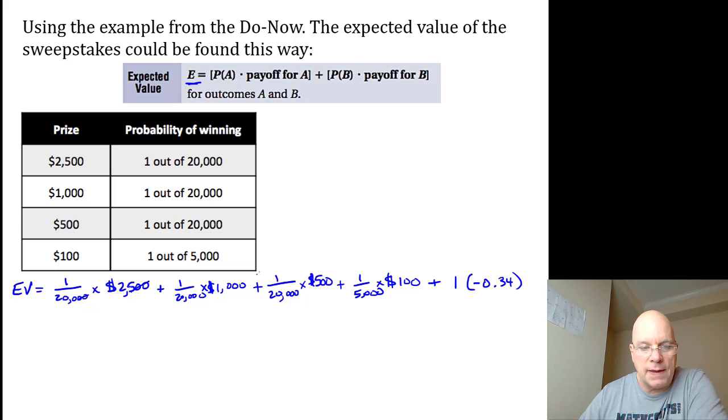I'll factor out a hundred hundredths, and then 25 over 200 is the same as 1 over 8, and I know 1 eighth is 0.125.